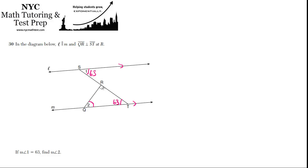And then we know, and they've labeled it for us, that QR is perpendicular to ST, so this is a right angle. So if this is 90,